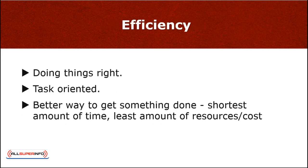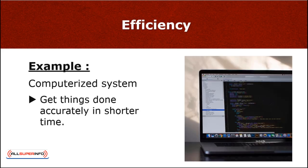Efficiency is about doing things right. This aspect is task-oriented. It's using better ways to get something done well in the shortest amount of time possible while utilizing the least amount of resources and/or costs. An example of efficiency would be using a computerized system to get things done accurately in a shorter span of time, as opposed to relying on manual methods to do the same thing, which will take more time and effort.